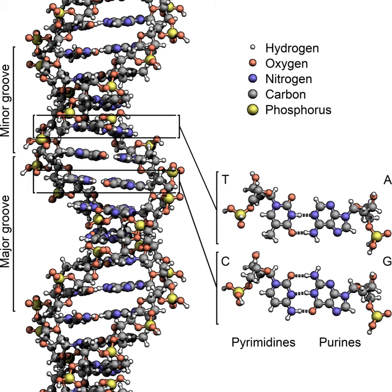As hydrogen bonds are not covalent, they can be broken and rejoined relatively easily. The two strands of DNA in a double helix can therefore be pulled apart like a zipper, either by mechanical force or high temperature. As a result of this complementarity, all the information in the double-stranded sequence of a DNA helix is duplicated on each strand, which is vital in DNA replication. Indeed, this reversible and specific interaction between complementary base pairs is critical for all the functions of DNA in living organisms.